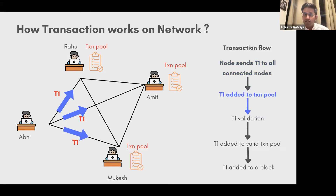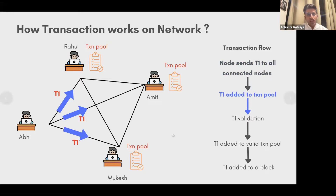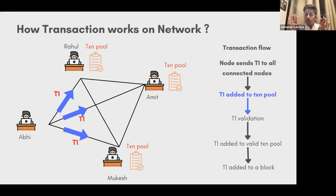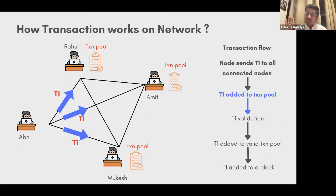As soon as other nodes receive my transaction, they add it to a pool — a waiting list. Abhishek has done a transaction and it's in the waiting pool, not yet confirmed. It's like a queue where you keep all incoming transactions that haven't been verified yet — you still need to verify whether I actually have 100 rupees to transfer to Amazon.